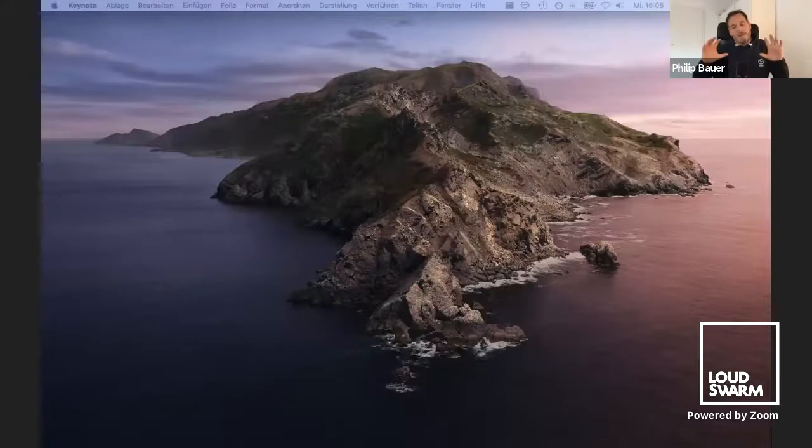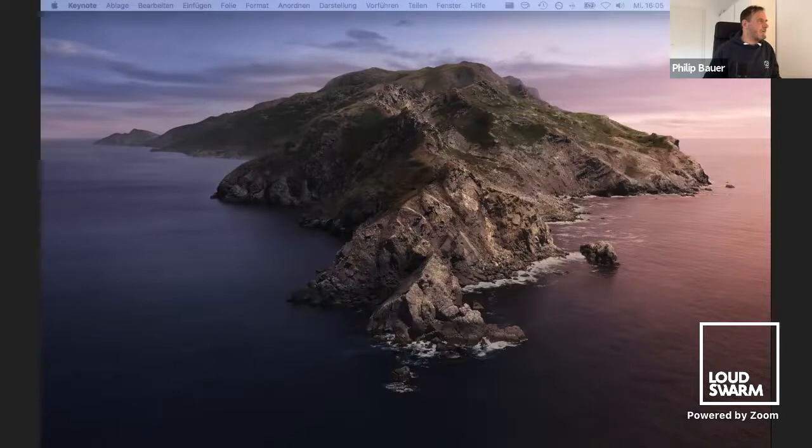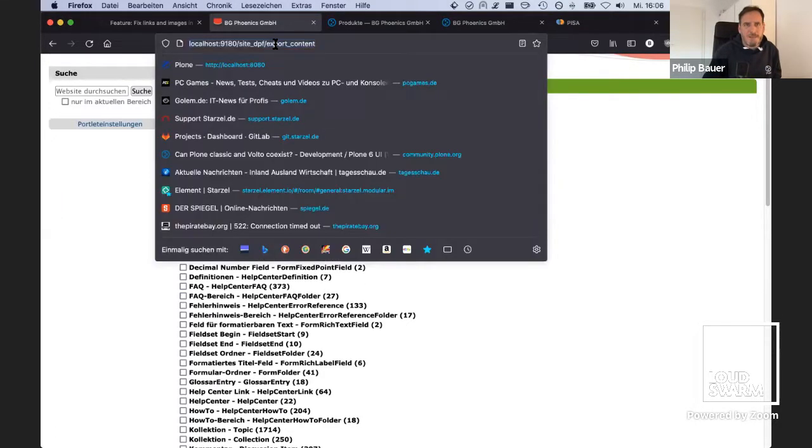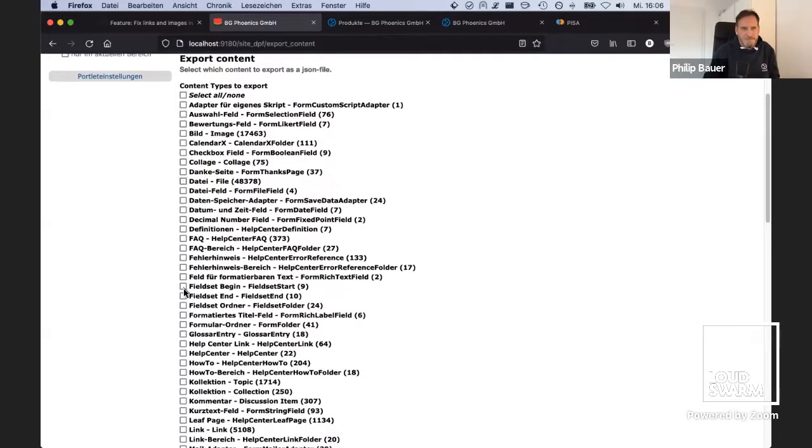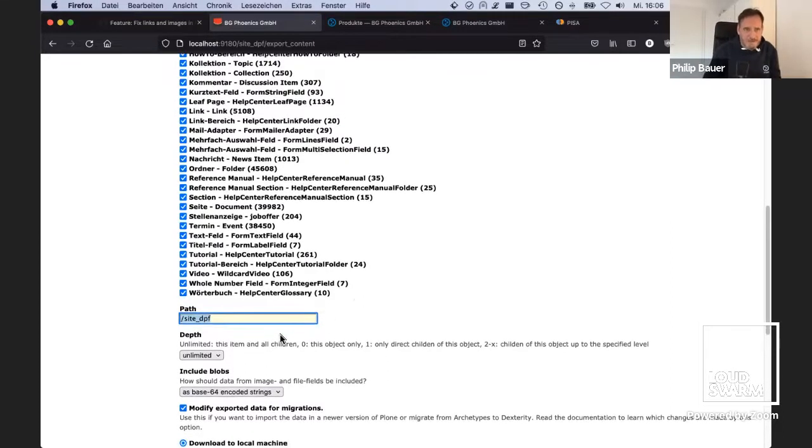Demo time. I was thinking about doing a real migration during this talk, but the migration I'm working on at the moment is like 80 gigabytes of data, and that would probably take too much time. So here is an example of a Plone site. It's a huge intranet, and that is the form that I'm calling export content. It's a browser view, and it gets you a list of all the content in the site and how many instances there are, and you can select which ones you want, and only export those that you're interested in.